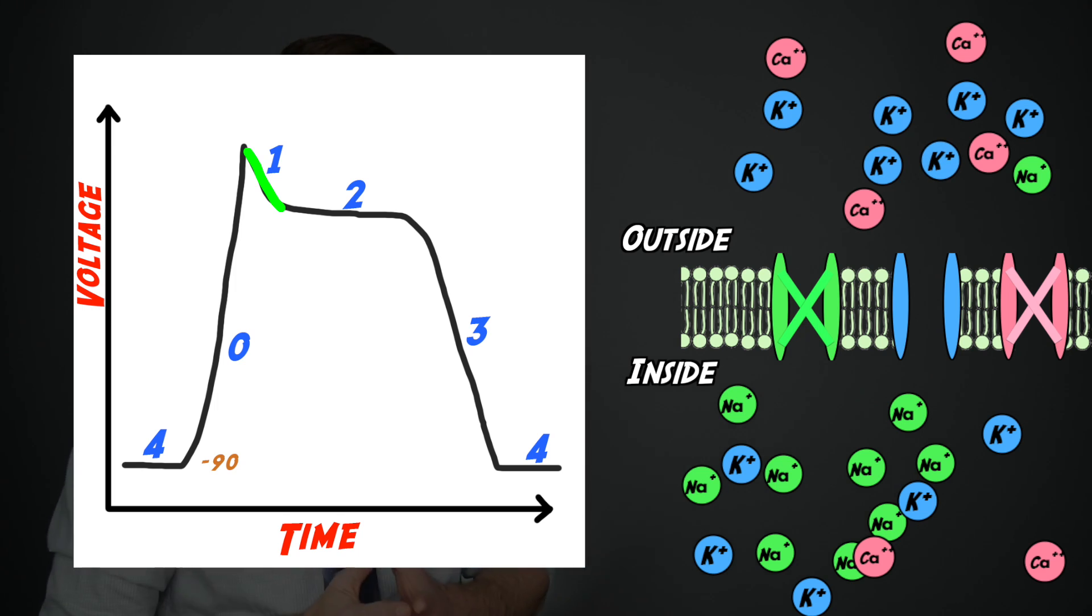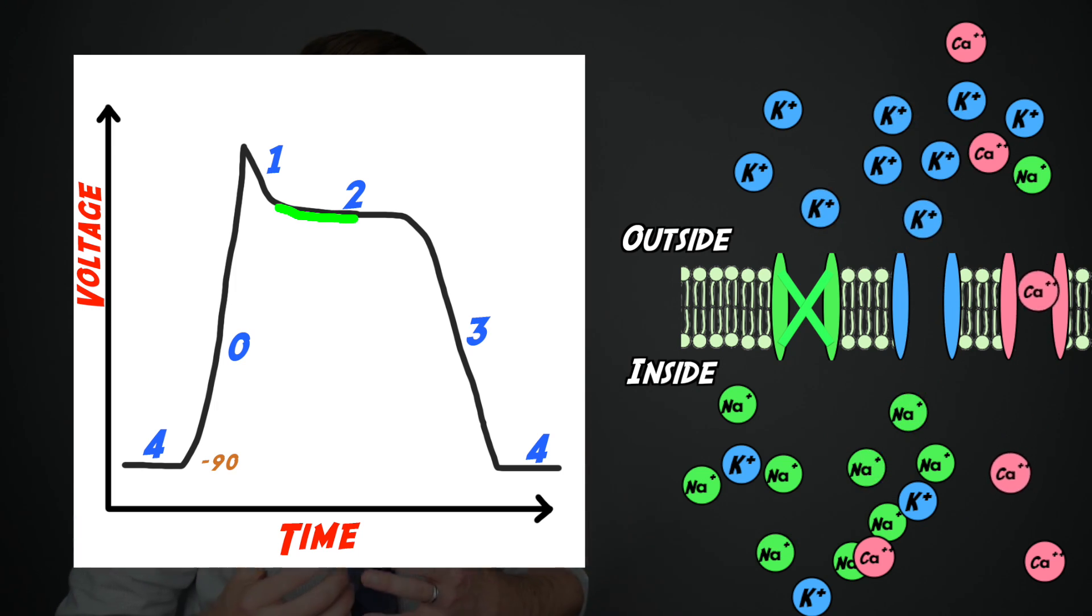Phase two is the plateau phase in which there's now balance between the potassium ions that are leaving the cell and some calcium ions that are coming into the cell, maintaining a relatively neutral electrical charge.